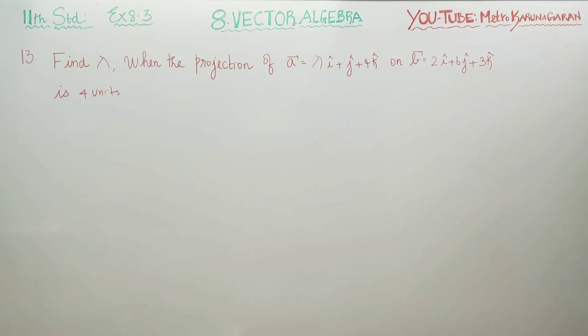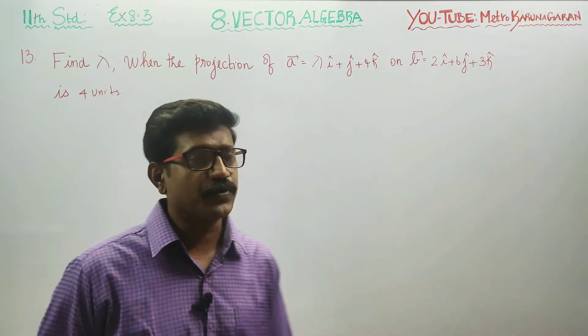Dear Learn Standard students, in exercise 8.3 problem 13, find lambda where the projection of A vector on B vector is 4 units.